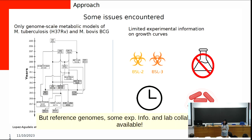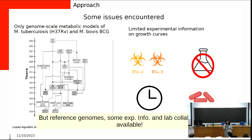Luckily, there are reference genomes available on NCBI, and there's experimental information on individual species. There is also some information about phenotypes and metabolic pathways. We also have a collaboration with the Francis Crick Institute in London, where they focus on mycobacterial metabolism and antibiotic resistance, and they have Biosafety Level 3 labs.